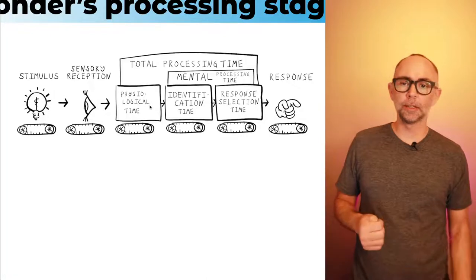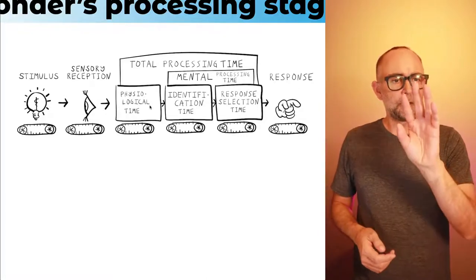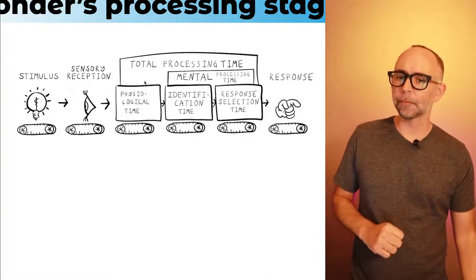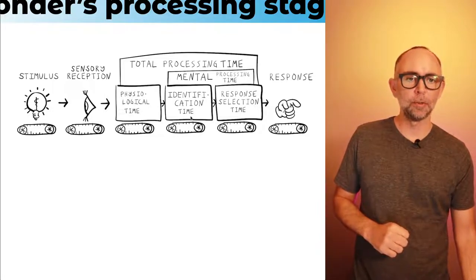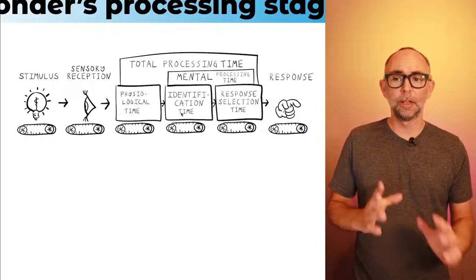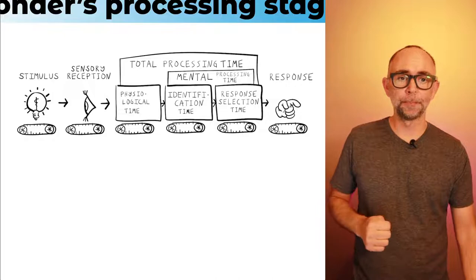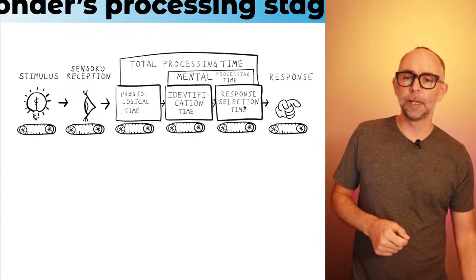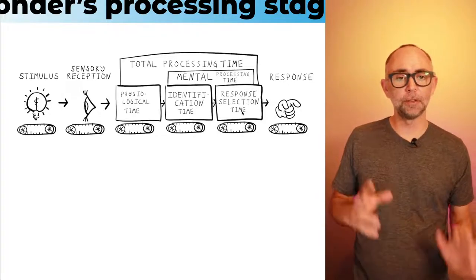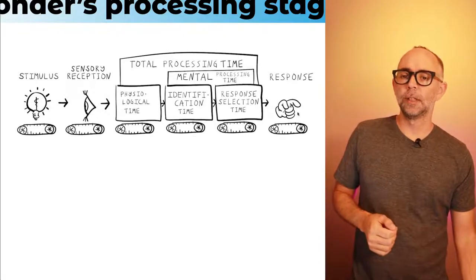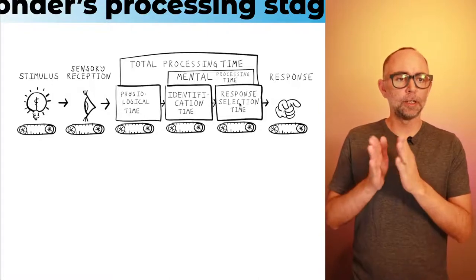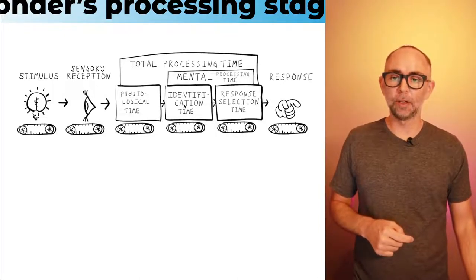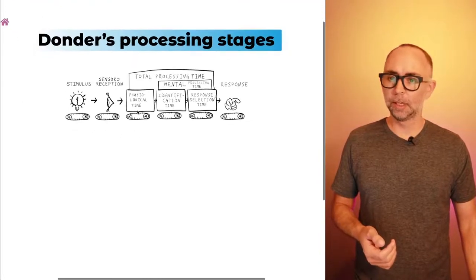If you have to do something more complicated — identifying what stimulus is there and deciding whether to respond — you might take extra identification time. And if you need to identify the stimulus and then figure out what response to make, you need response selection time. Donders was thinking that all of these intervening cognitive stages might occur, and he had a strategy for trying to measure how long each of these stages would take. That was his big idea.